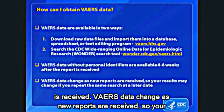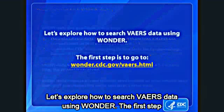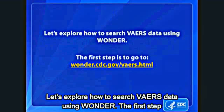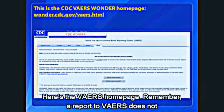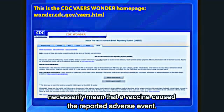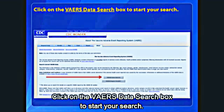VAERS data change as new reports are received, so your results may change if you repeat the same search at a later date. Let's explore how to search VAERS data using Wonder. The first step is to go to wonder.cdc.gov/vaers.html. Here's the VAERS homepage. Remember, a report to VAERS does not necessarily mean that a vaccine caused the reported adverse event. Click on the VAERS data search box to start your search.